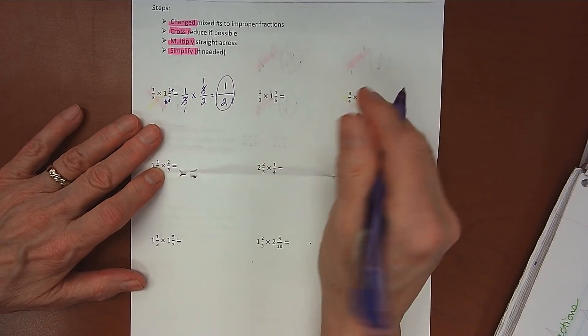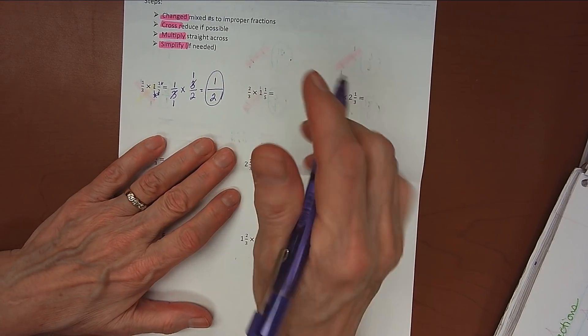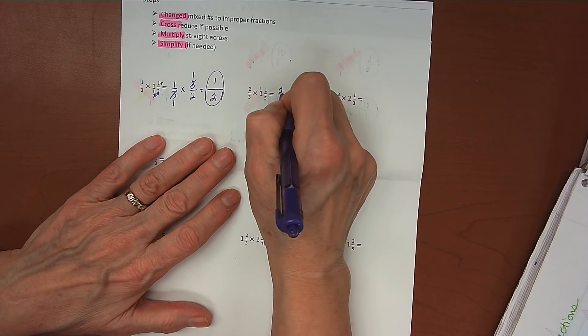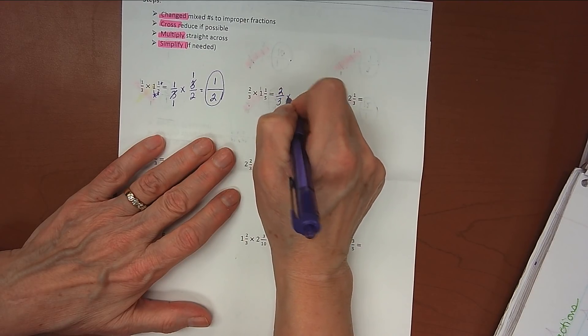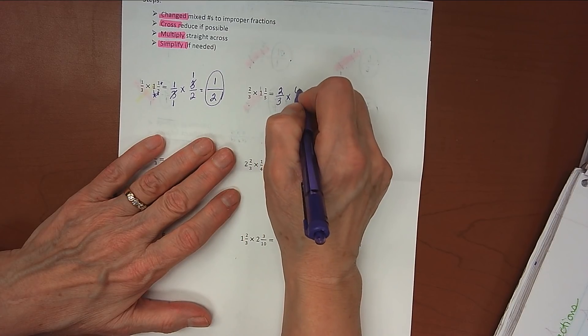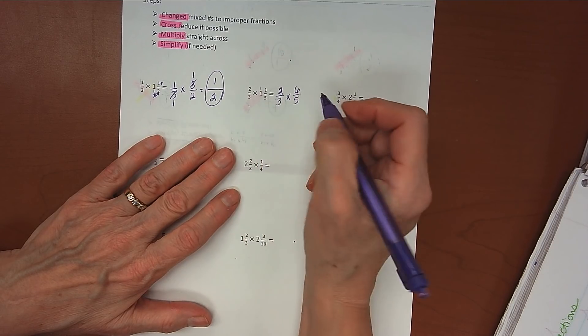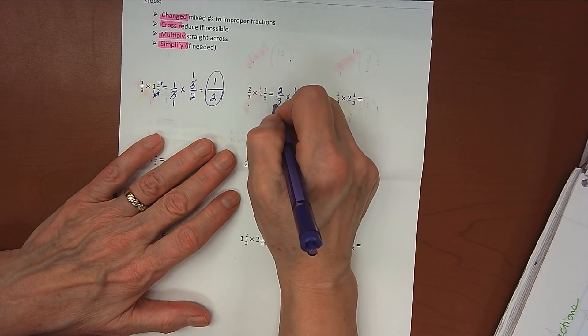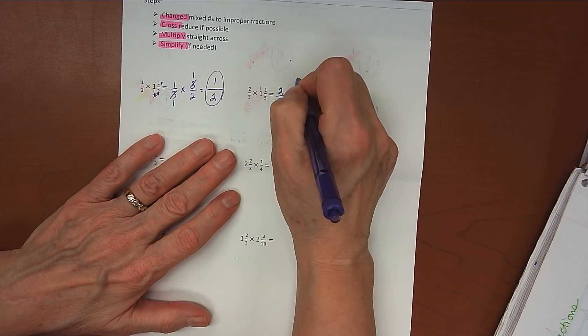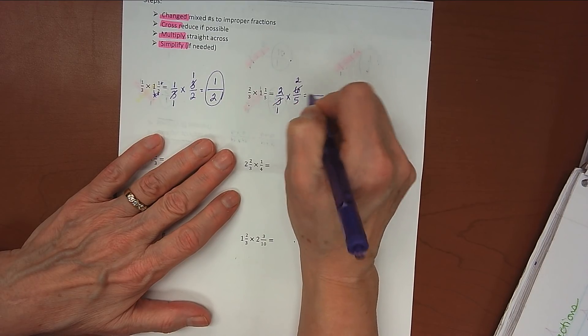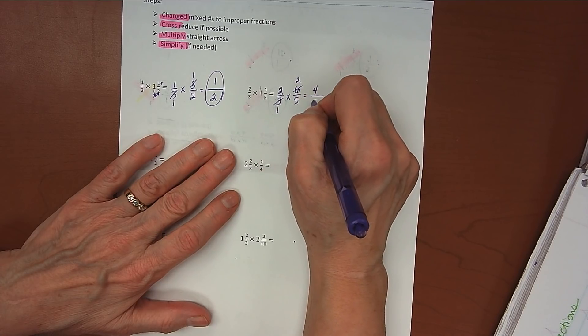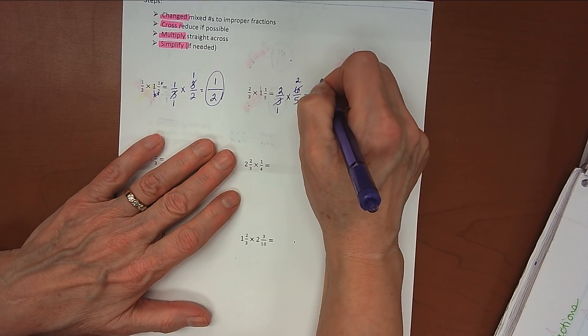Alright, looking at my next problem. I'm going to leave 2/3 alone. It doesn't change at all. 1 times 5 is 5, plus 1 is 6, so that becomes 6/5. Looking where I can simplify, 3 divides by 3 once, and 6 divides by 3 twice. Ready to multiply straight across. 2 times 2 is 4, 1 times 5 is 5, and so my answer there is 4/5.